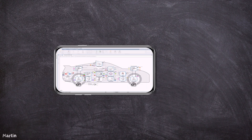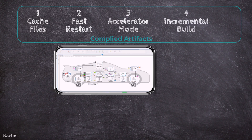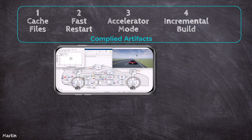In this tutorial, we'll explore 10 effective methods to speed up Simulink simulations. We'll start by covering Simulink cache files, fast restart, accelerator mode, and incremental build – techniques that utilize compiled artifacts to enhance simulation speed.